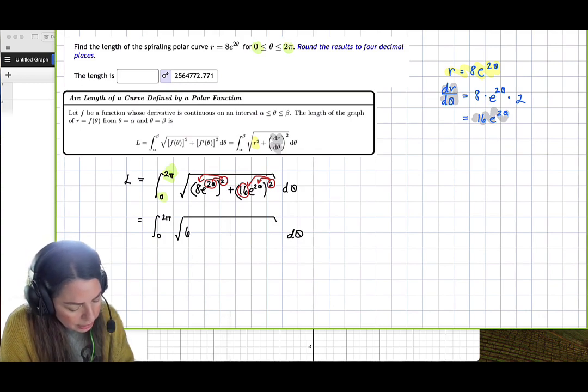So then we're going to get 64 e to the 4 theta plus 256 e to the 4 theta.